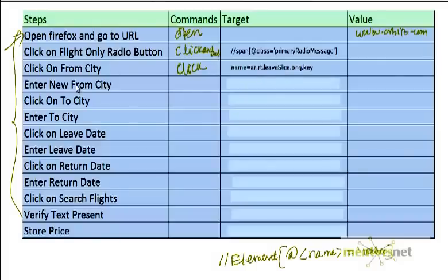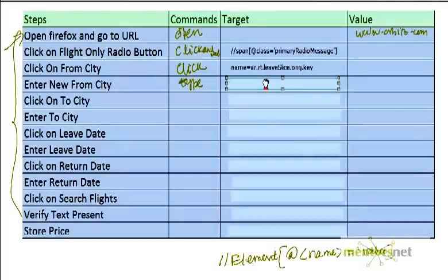Next, I need to enter a new 'From City'. When I am entering something, that is a new command called 'type' — very intuitive, since I am typing something. So I am entering a new city, and the command would be 'type'. The locator is the same as in the previous click step — we are typing into the 'From City' field.